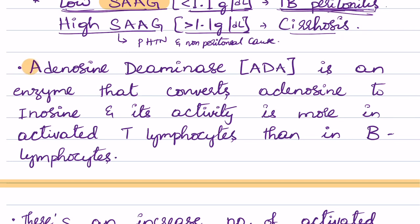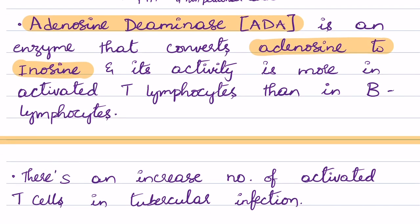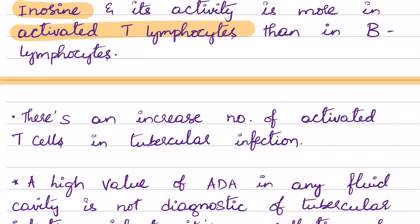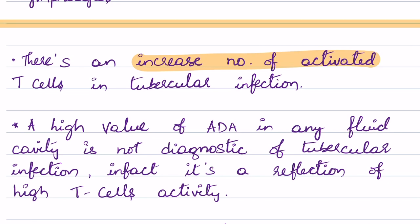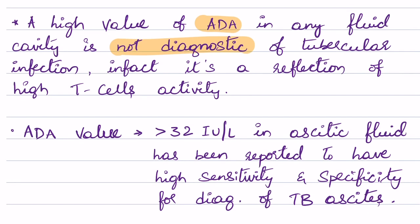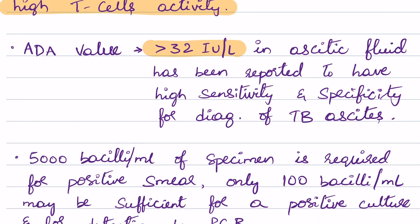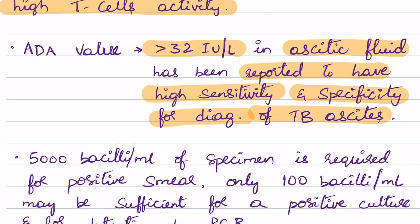Adenosine deaminase (ADA) is an enzyme that converts adenosine to inosine, and its activity is greater in activated T lymphocytes than in B lymphocytes. There is an increase in the number of activated T cells in tuberculosis infection. It is important to remember that a high ADA value in any fluid cavity is not diagnostic of tuberculosis — it is a reflection of high T cell activity. However, research has found that an ADA value of more than 32 international units per liter in ascitic fluid has high sensitivity and specificity for diagnosis of TB ascites.